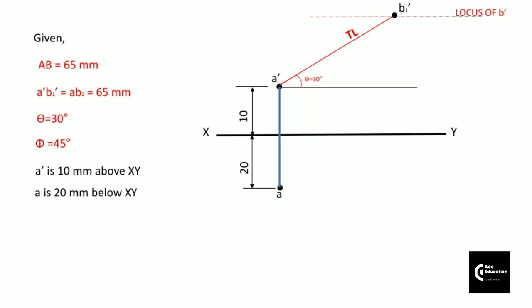Similarly, in the top view, point B2 and point B will lie on the same locus. We have used the data of theta here. Now we will use another data that is angle phi. From point A we will measure angle phi and mark the true length that is line AB2, so we get the locus of point B. This is again a true length at angle phi that is 45 degrees.